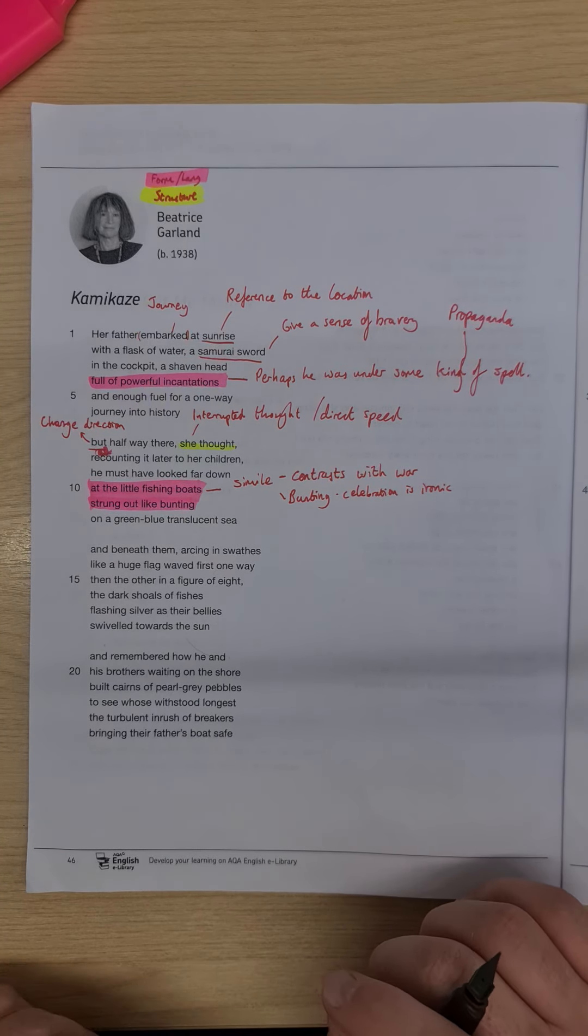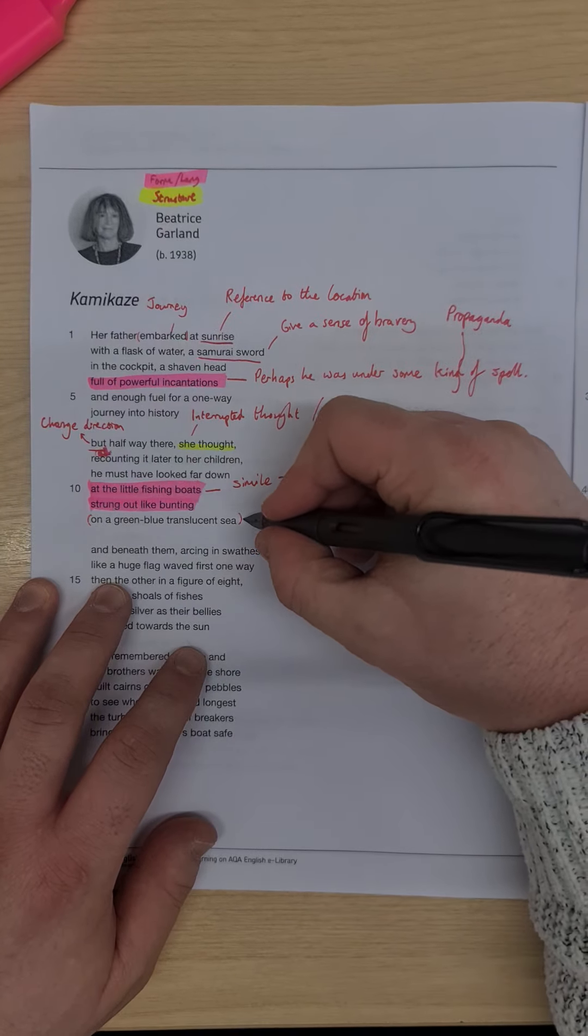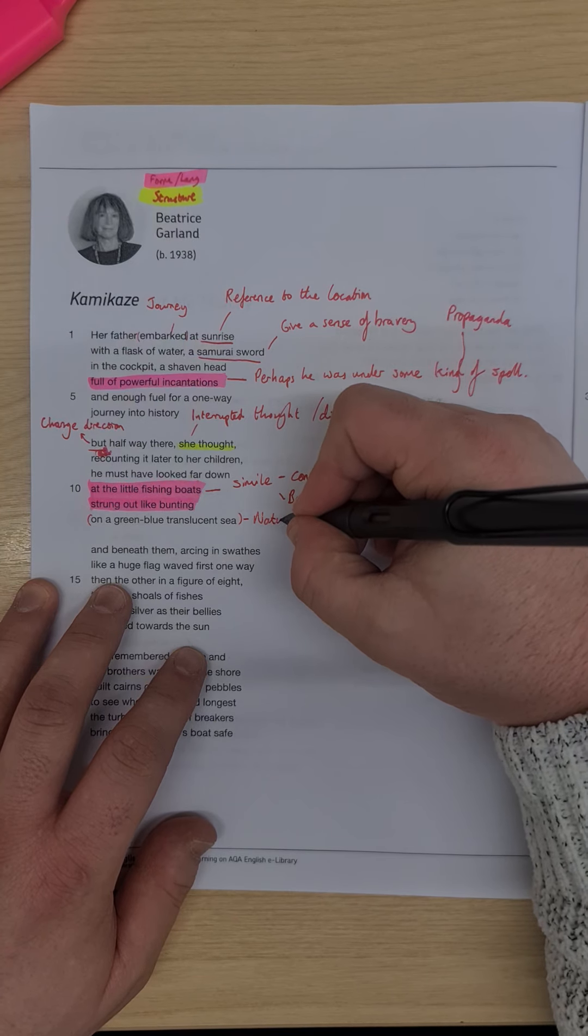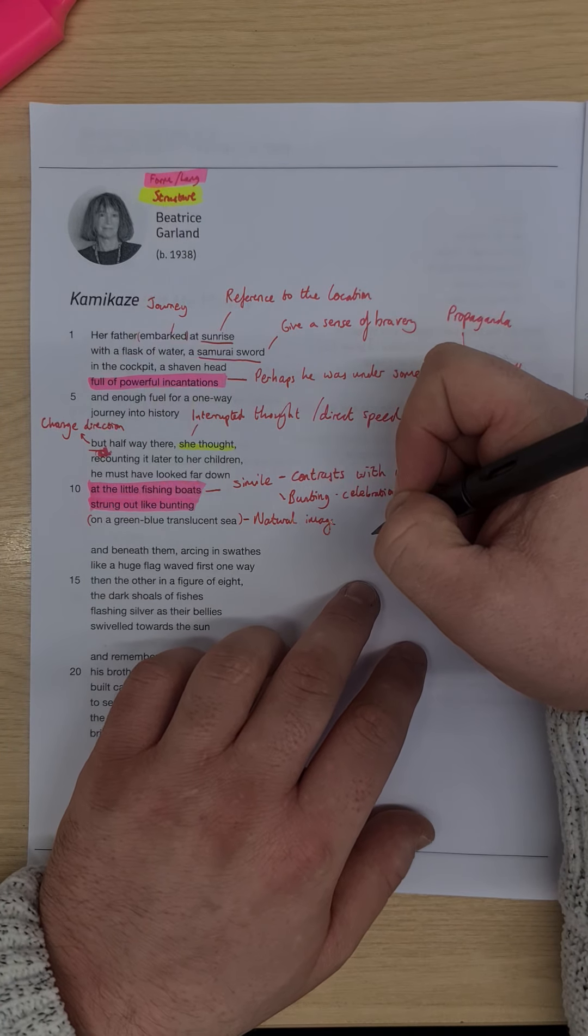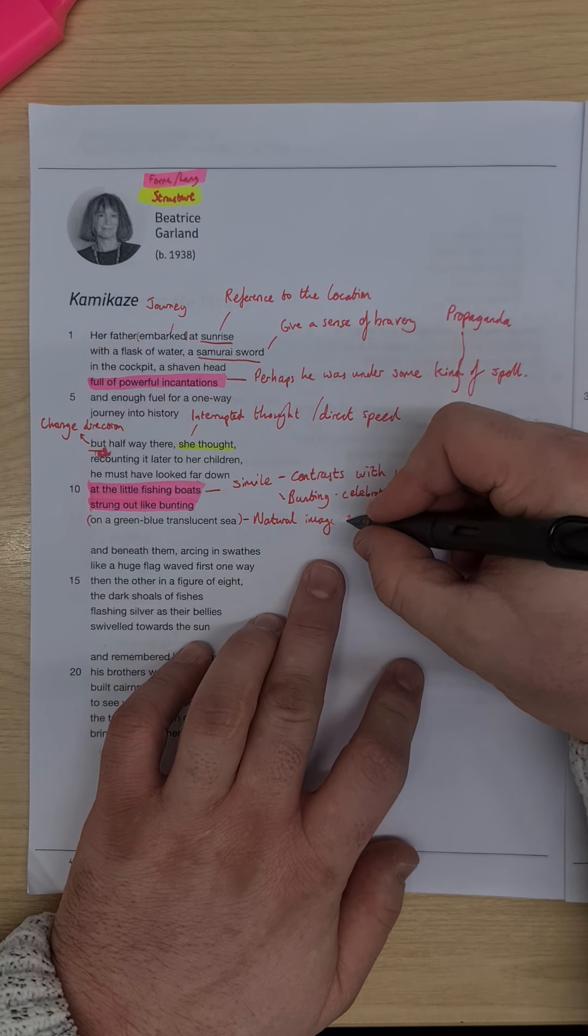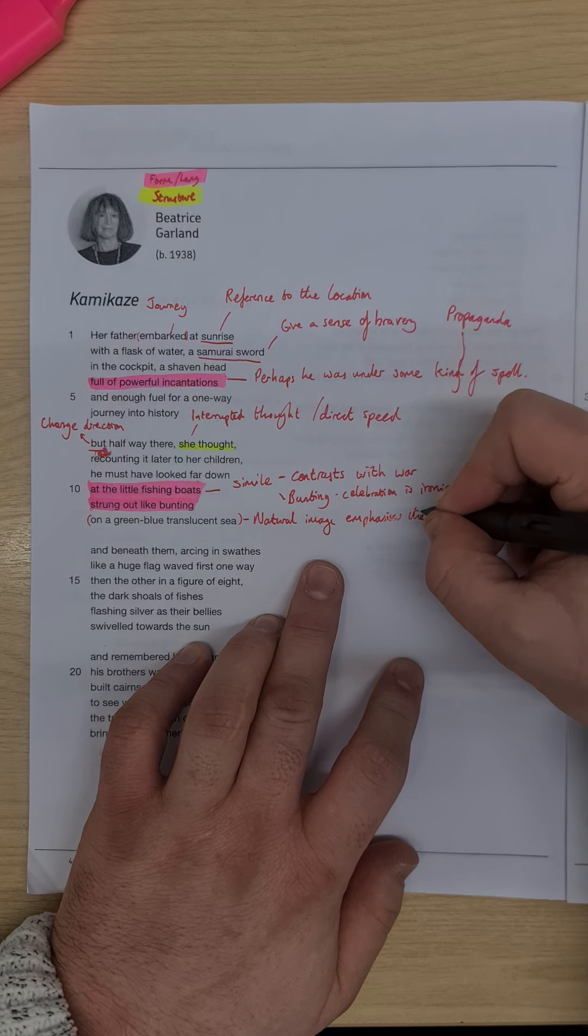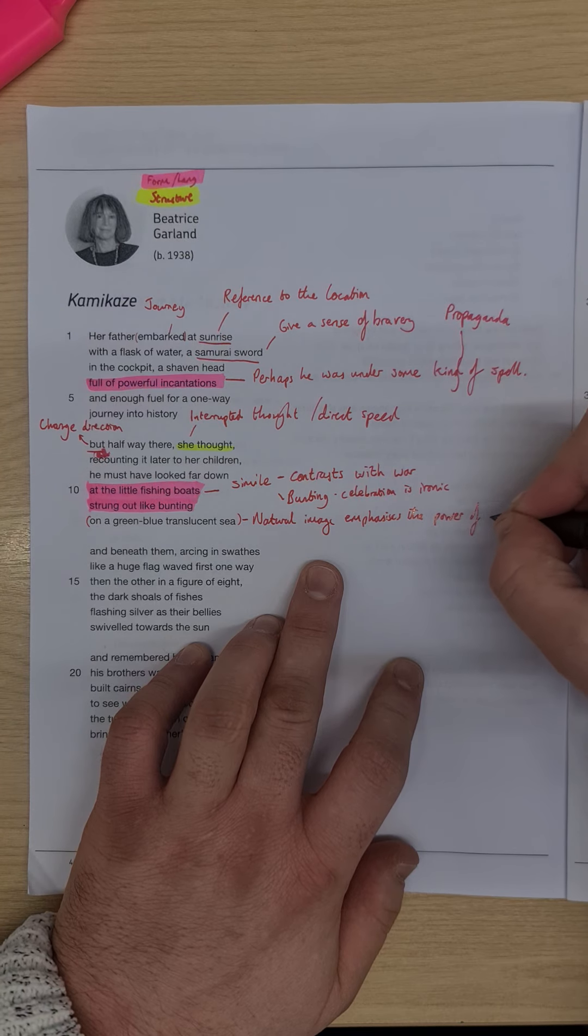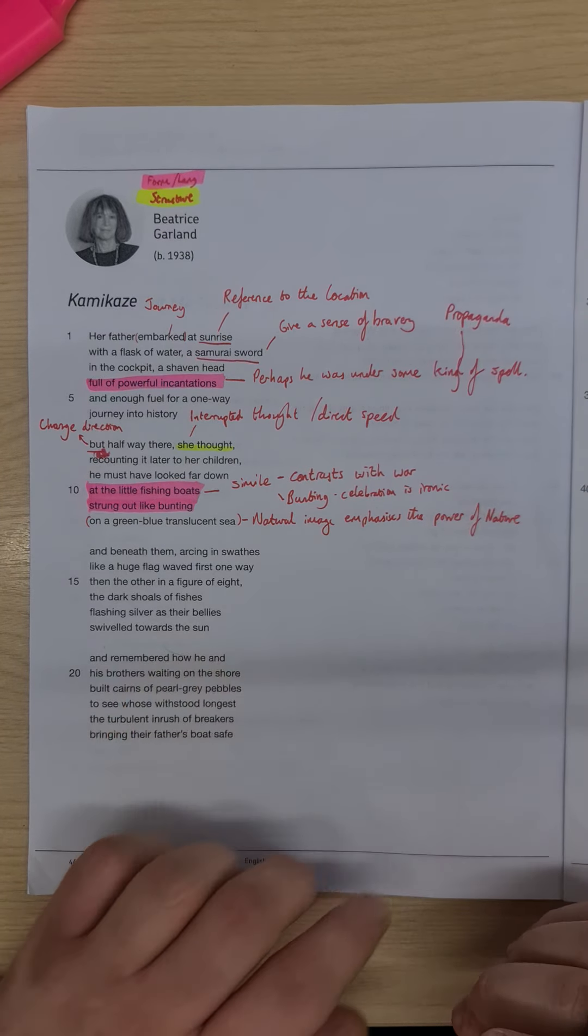On a green-blue translucent sea. And we finish off this stanza with a really nice natural image. And the natural image here emphasises the power of nature, and the power of nature here to change somebody's mind. So she's casting an aspersion that perhaps it was the beauty of what he saw that made him want to turn around.